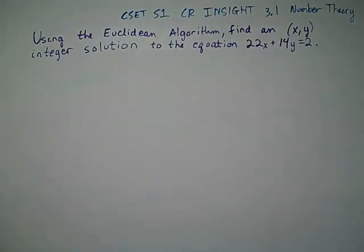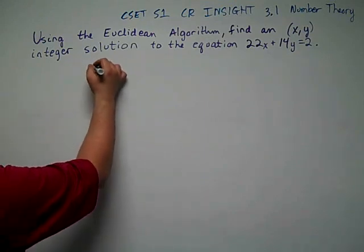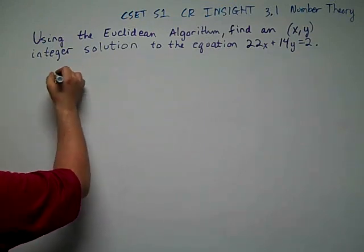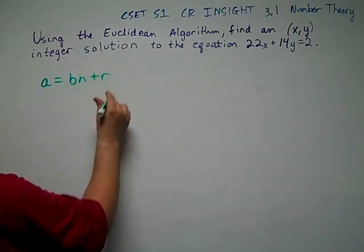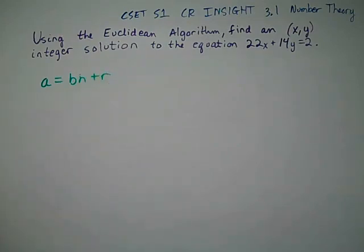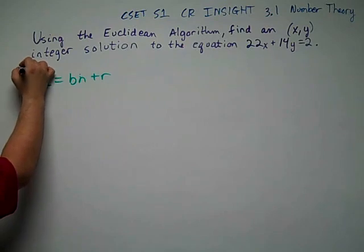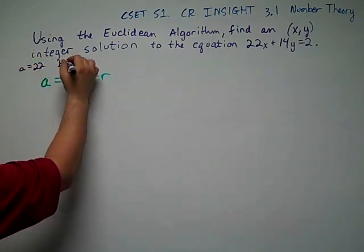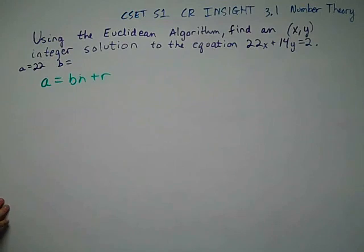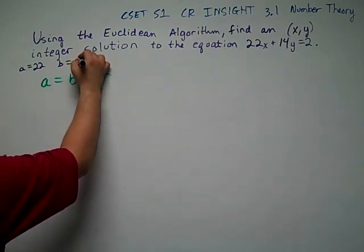Sub-test one from the C-set, number three. We need to recognize the form first off. So form A equals BN plus R. We're going to state from the beginning that A is 22 and B is 14.